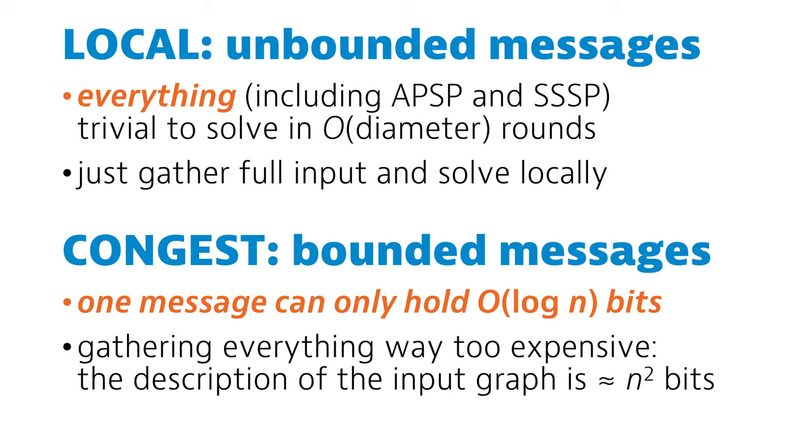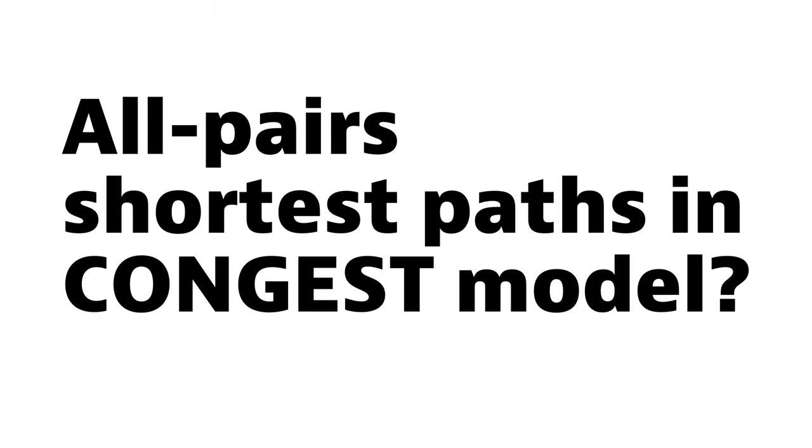You can only send around small numbers, for example unique identifiers or distances. So how to solve APSP in the congest model fast?